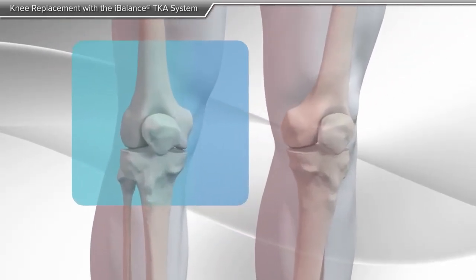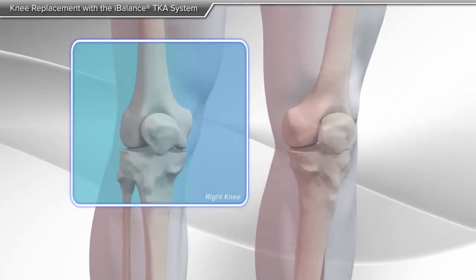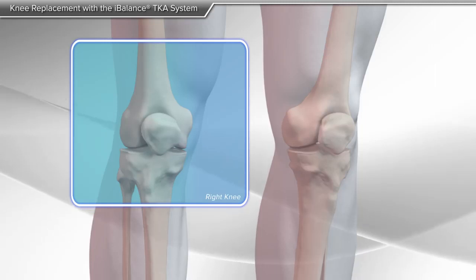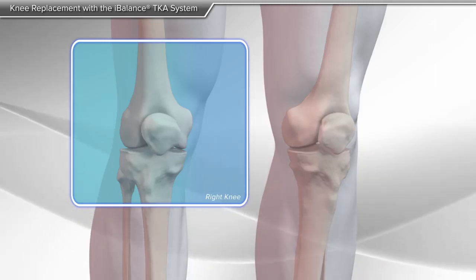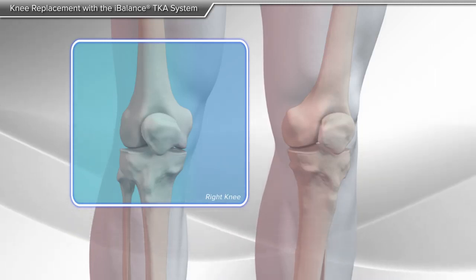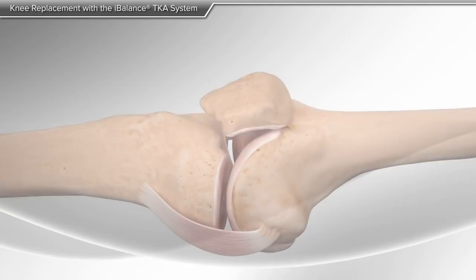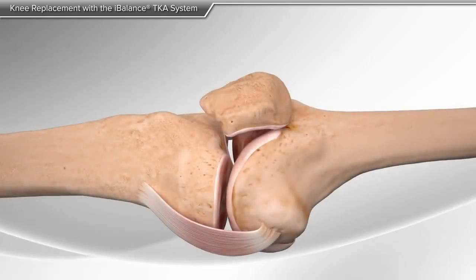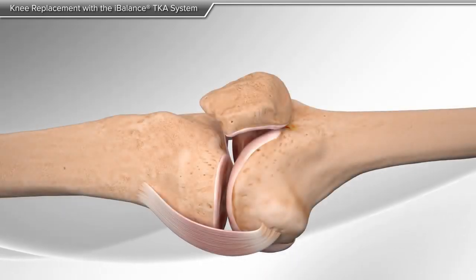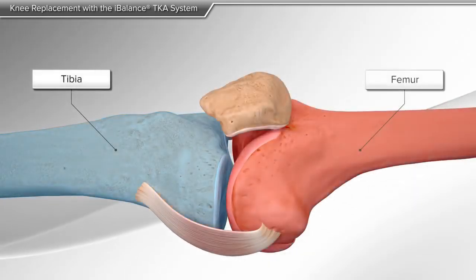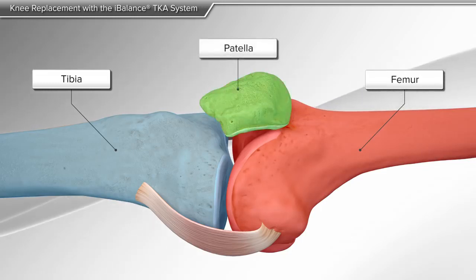In this animation, we will show you a total knee replacement due to arthritis. The knee consists of the tibia, or shin bone, femur, or thigh bone, and patella, or kneecap.